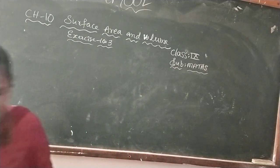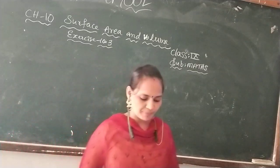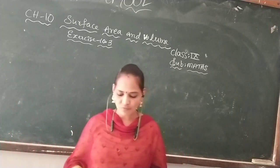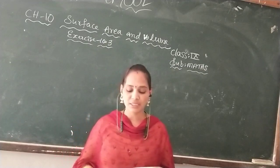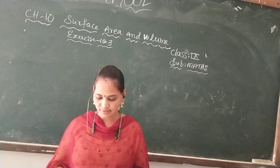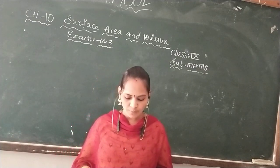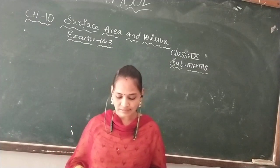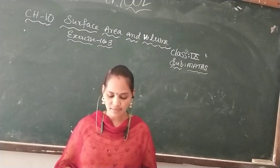Let me read the question. The cost of painting the total surface area of a cone at 25 paise per cm² is Rs.176. Find the volume of the cone if its slant height is 25 cm.